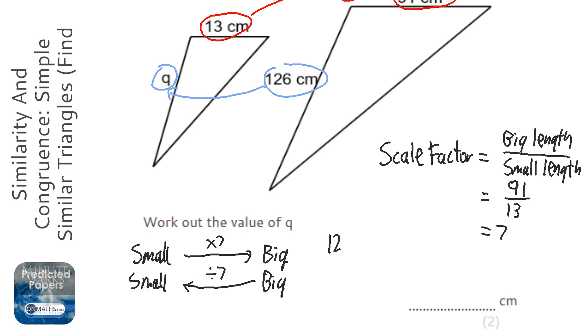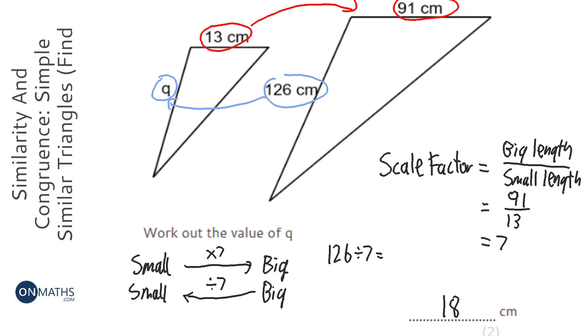So we're going to do 126 divided by 7. So 126 divided by 7 is 18. Now last thing is just check that makes sense. Well, we've got a smaller triangle, so we've gone from 126 centimeters to 18 centimeters, that makes sense. And 126 is bigger than 91, so that length was going to be bigger than 13. Well, 18 is bigger than 13, so chances are it's the correct answer.